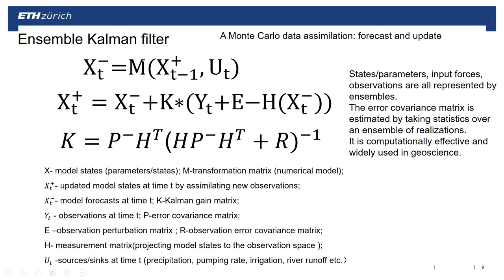The update process is the same — forecast plus Kalman gain multiplied by the difference between observations and calculations. Here X not only includes the model state, it can also include the parameters, depending on your purpose. If you only want to update the model state, X represents only the state matrix. If you want to update both, X can be this augmented matrix — meaning we put the parameters and states together in one variable.